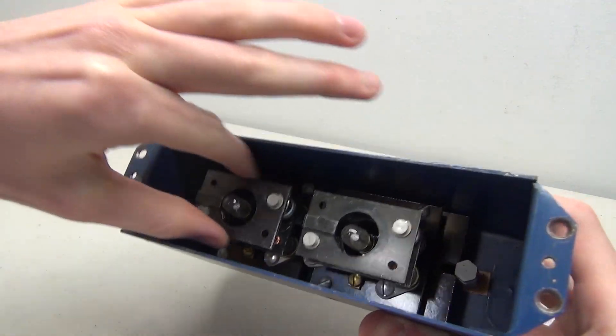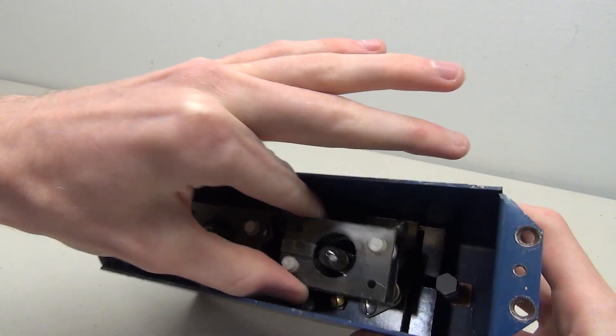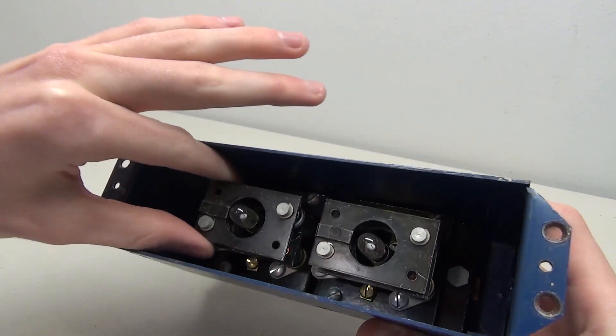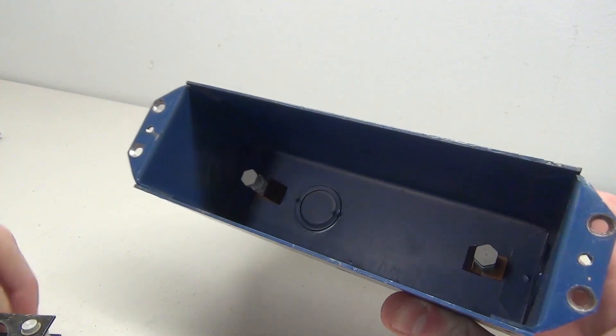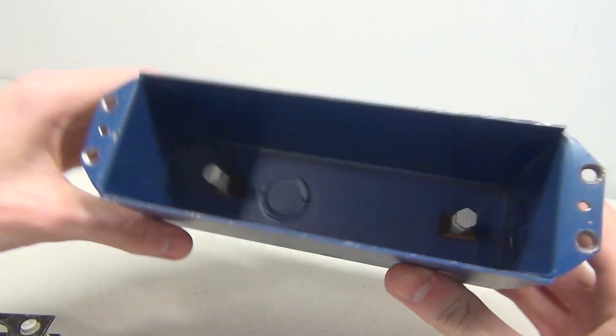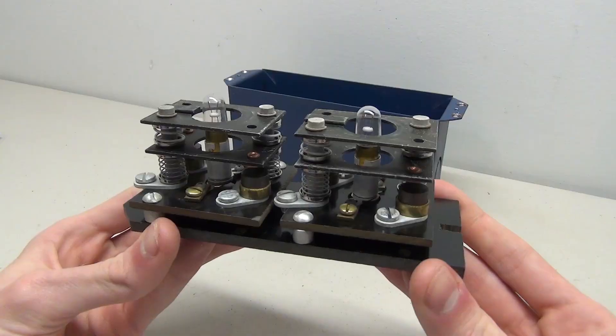You can see here that the actual board that holds the buttons in is not really secured in there. It's very loose and it moves around. If I pull it to the side, I can actually pull the whole board out, and you can see in here there's the two pieces on the bottom which hold the board in place.